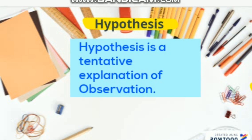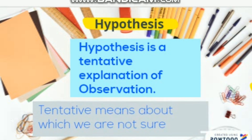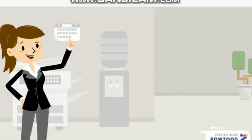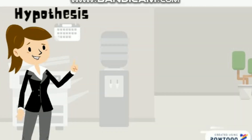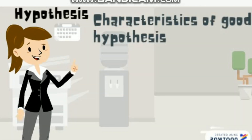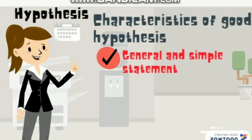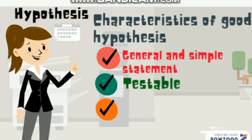Now let's study hypothesis in detail. A hypothesis is a tentative explanation of observation. Tentative means we are not sure about it, as the statement is made on the basis of observations. Now let's see the characteristics of a good hypothesis.